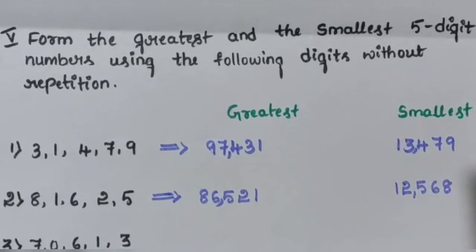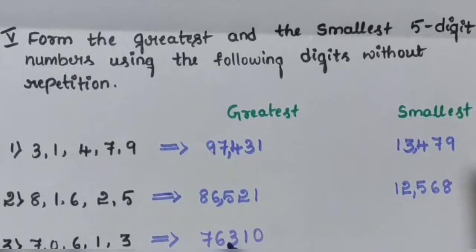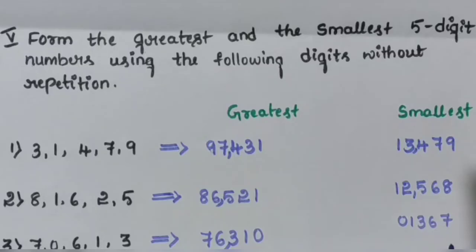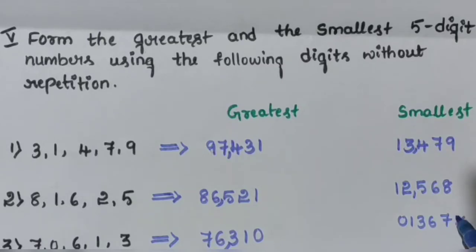Question number 3 — digits are 7, 0, 6, 1, 3. The greatest number is 7, 6, 3, 1, 0 — so 76,310. For the smallest, placing 0 first gives no value on the left side, so 0, 1, 3, 6, 7 would give 1,367 — not a 5-digit number, that is wrong. So the next arrangement is 1, 0, 3, 6, 7 — so 10,367 is the correct smallest number.